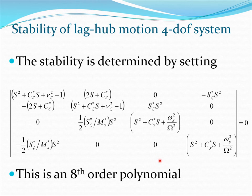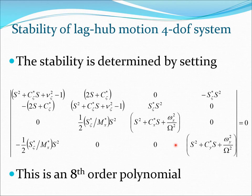Some things to clearly see here: you have the term c_zeta, which represents the damping for the lag motion — the lag mode. You also have terms involving s_zeta_star, which are essentially the coupling terms. All coupling terms come from s_zeta_star. And then of course you have the support motion in two equations, which essentially represent the lag motion.